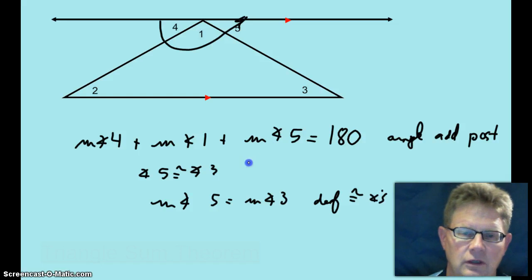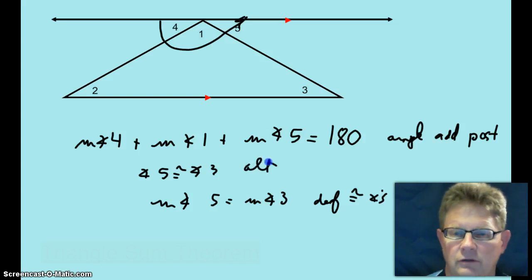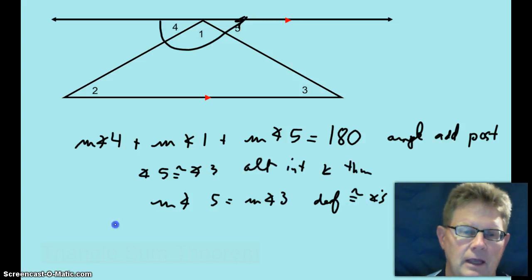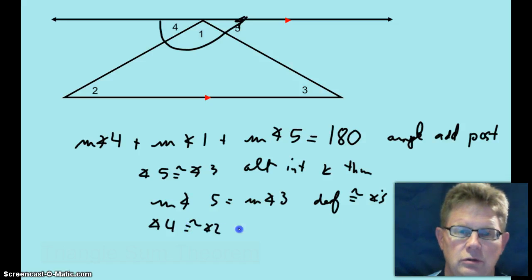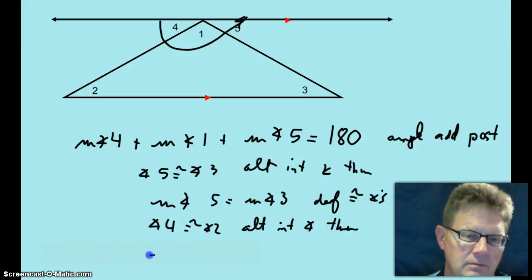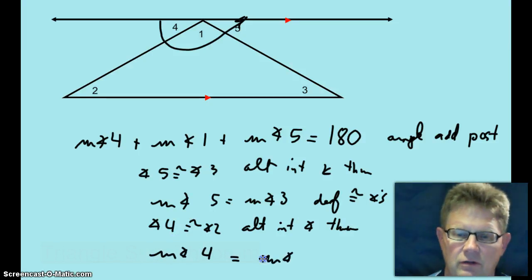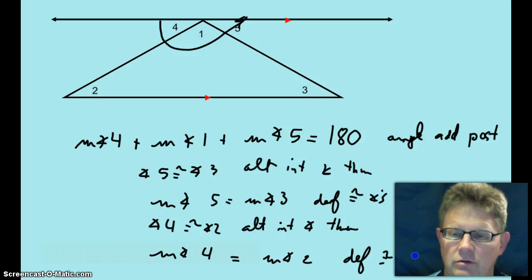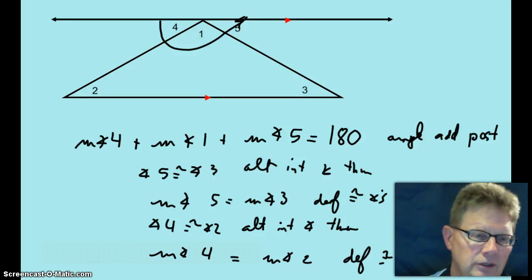That was the alternate interior angle theorem. And for the same reason, angle 4 is congruent to angle 2, using the alternate interior angle theorem. So that makes the measure of angle 4 equal to the measure of angle 2, by the definition of congruent angles. If you know they're congruent, you can say that their measures are equal.